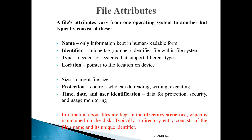The third attribute is file type, which is needed if the system supports multiple file types. Fourth is file location, used to find the location of the file on the disk. Fifth is size, representing the current size in bytes, words, or blocks, and possibly the maximum allowed size. Sixth is file protection, containing access control information about which process is allowed to read, write, or execute the file. The seventh attribute is time, date, and user identification — recording when the file was created, last modified, and last used, for protection and security purposes.